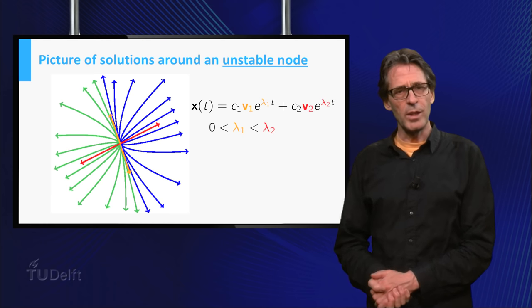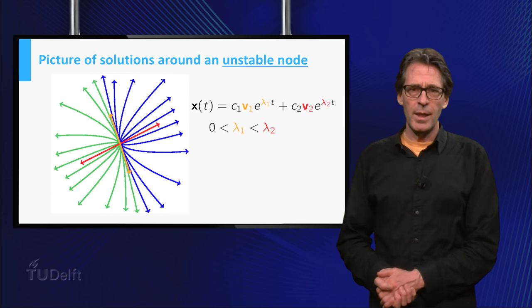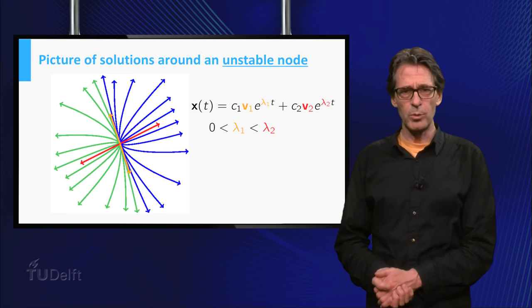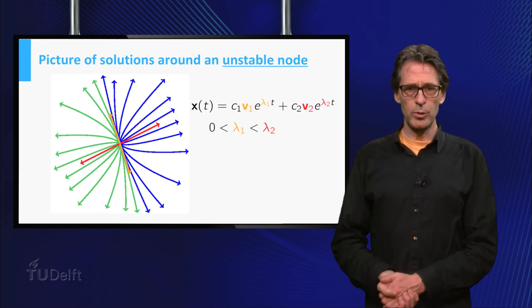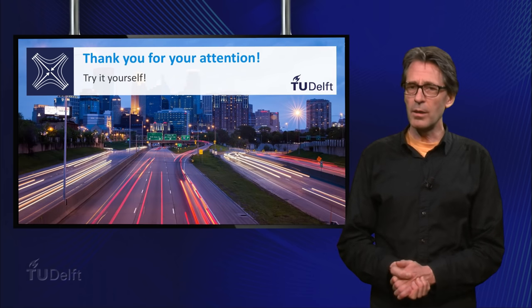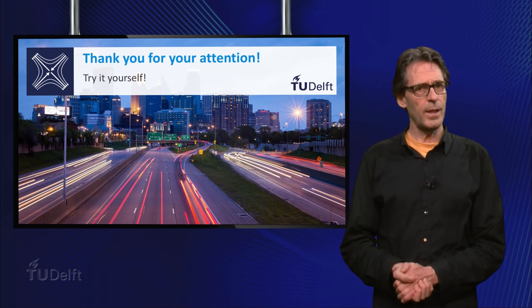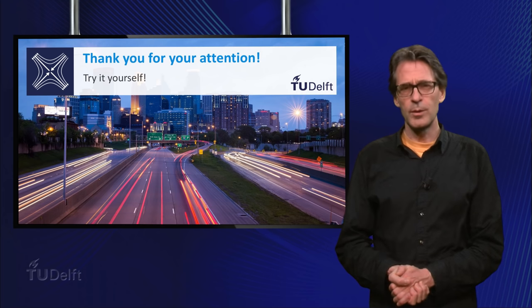If both eigenvalues are negative, the origin is the stable node, and you get the right picture by just reversing the arrows. In class you will learn how to handle the situation with complex eigenvalues. So you see, eigenvalues and eigenvectors rule this world. Thank you for your attention, goodbye.